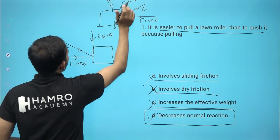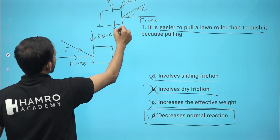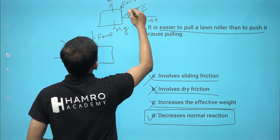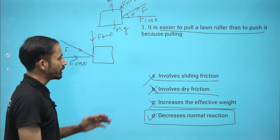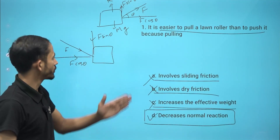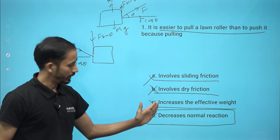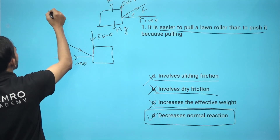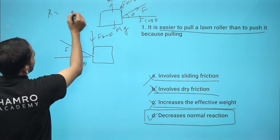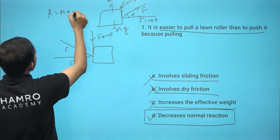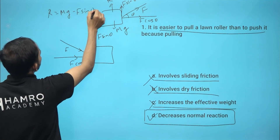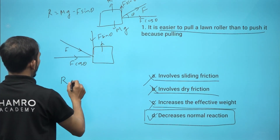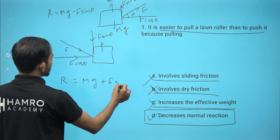R equals to... When we pull at an angle, R equals to Mg minus F sin theta. The F sin theta component is subtracted from Mg. So normal reaction decreases. For pushing, R equals to Mg plus F sin theta, which increases the normal reaction.